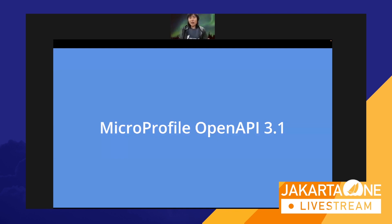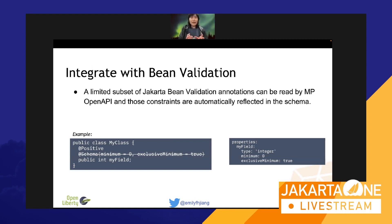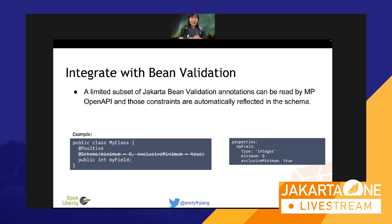What's in MicroProfile OpenAPI 3.1? The main thing to know is OpenAPI 3.1 has no backward incompatible changes. The first capability is closer integration with Jakarta EE technologies. One thing is Bean Validation — in the past, even if you used Bean Validation, you had to separately specify OpenAPI annotations. From MicroProfile OpenAPI 3.1, it automatically translates Bean Validation annotations, such as @Positive, giving you a minimum of zero in the description.